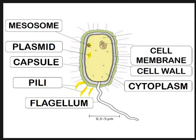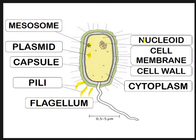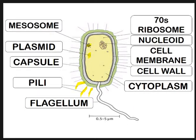Then we have the cell membrane - the inner layer - which is what folds in to create the mesosome. It's the same as in a eukaryotic cell: it controls what comes in and out of the cell. Then we have the nucleoid, sometimes referred to as the genetic material - it's the genome of the bacteria containing all its DNA. Then lastly, we have 70S ribosomes. You met ribosomes in eukaryotic cells - a ribosome in a eukaryotic cell is 80S, whereas a ribosome in a prokaryotic cell is 70S because it's smaller.